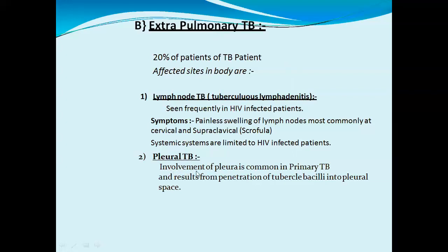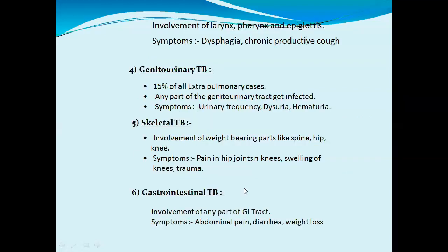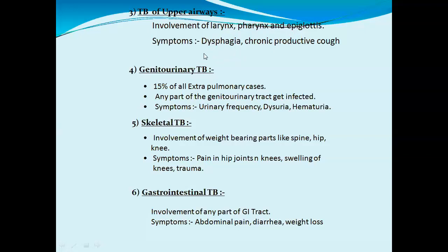Pleural tuberculosis involves the pleura and is common in primary tuberculosis. It results from penetration of bacteria into the pleural space. TB of the upper airways involves organs of the respiratory system such as the larynx, pharynx, and epiglottis. Symptoms include dysphagia — swelling — and chronic productive cough.